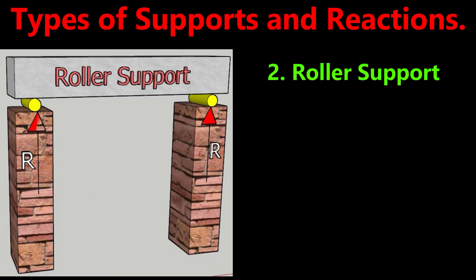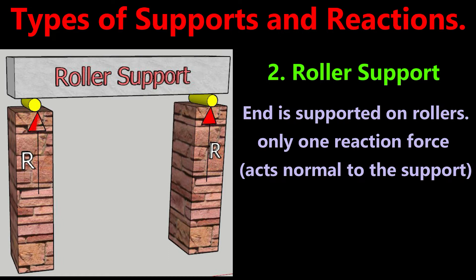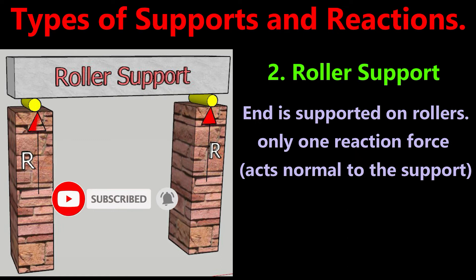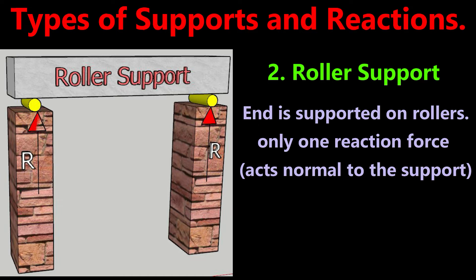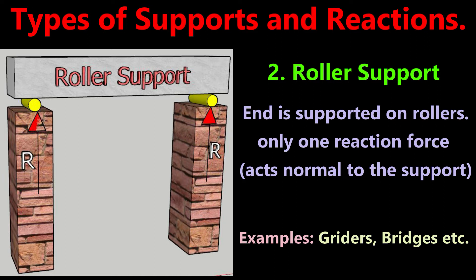2. Roller support. In this case, the beam end is supported on rollers. In this roller support also, the reaction is always normal to the support since rollers are free to roll along the support. In the idealized condition, rolling friction is neglected and hence there is no resistance in the line of support. The ends are free to rotate also, so there is no resistance to movement in the case of roller support. We can see this type of support in bridges and in mechanical components which are provided with roller supports that roll between the girders.